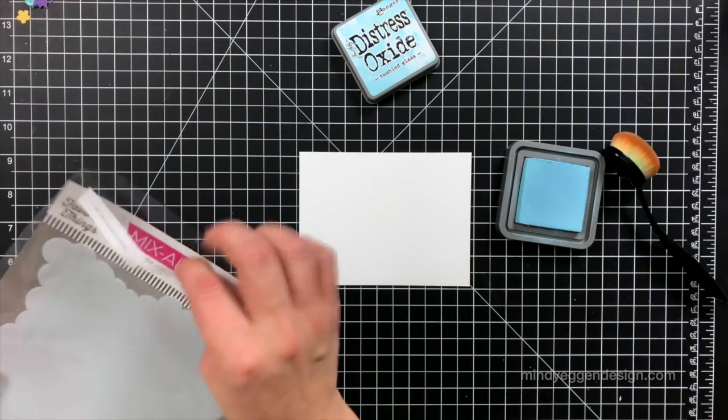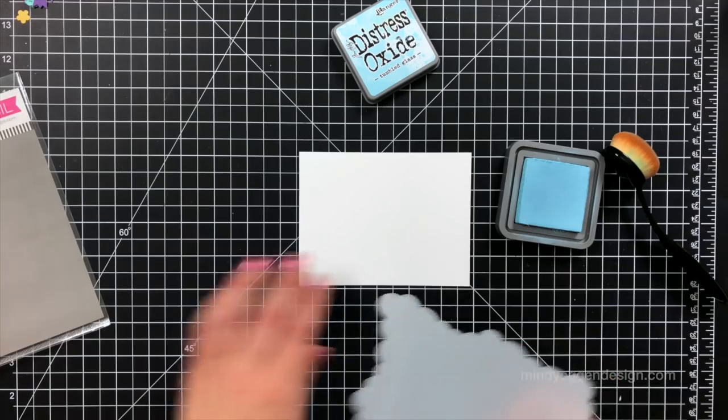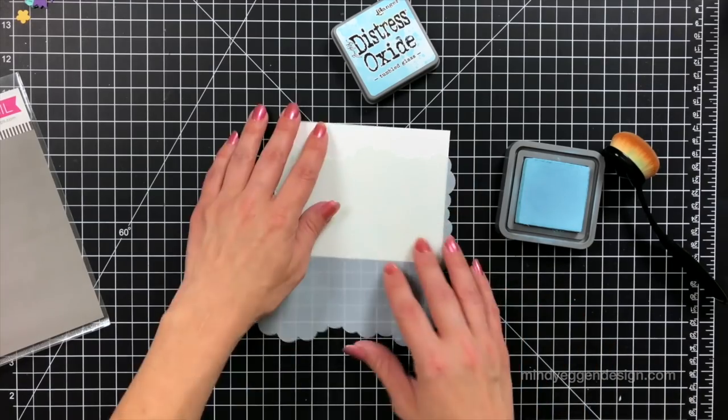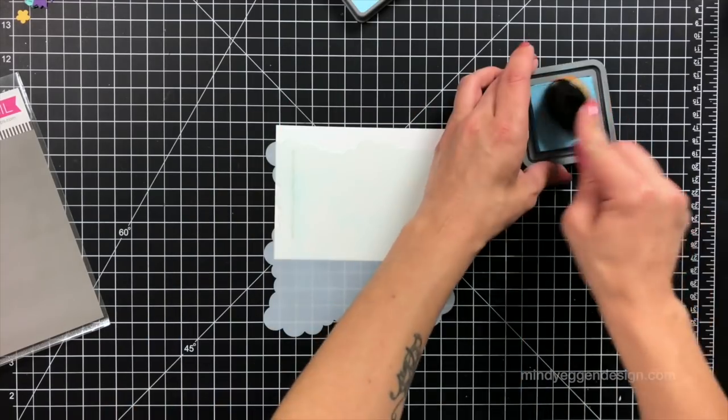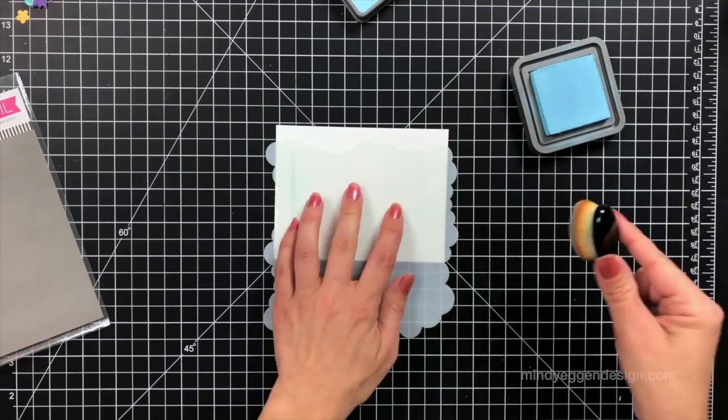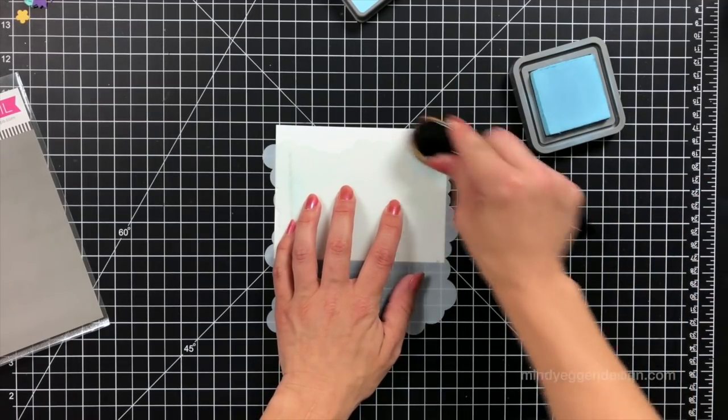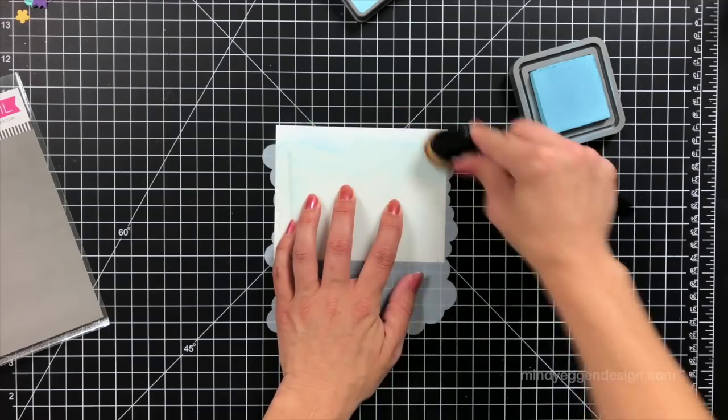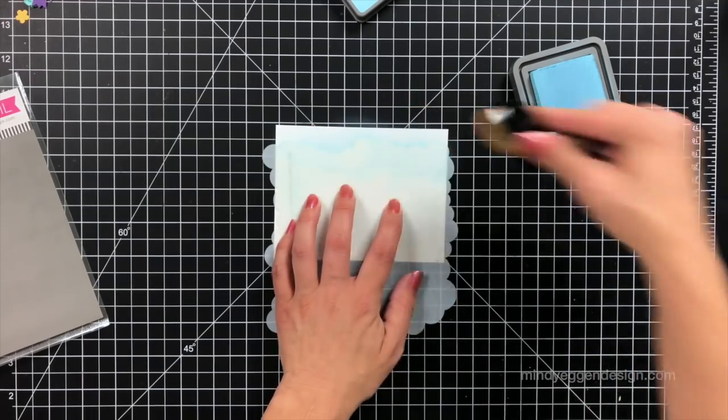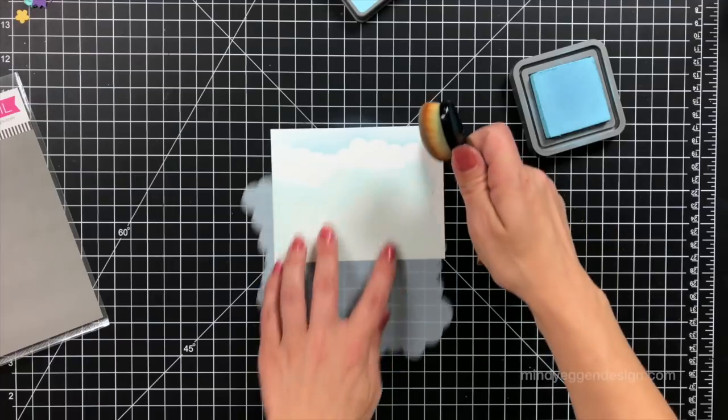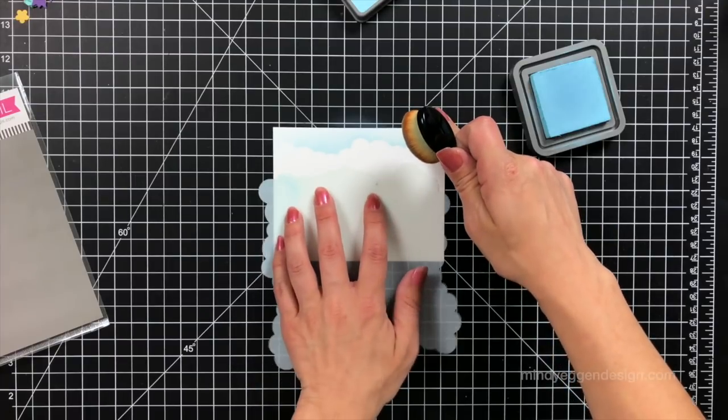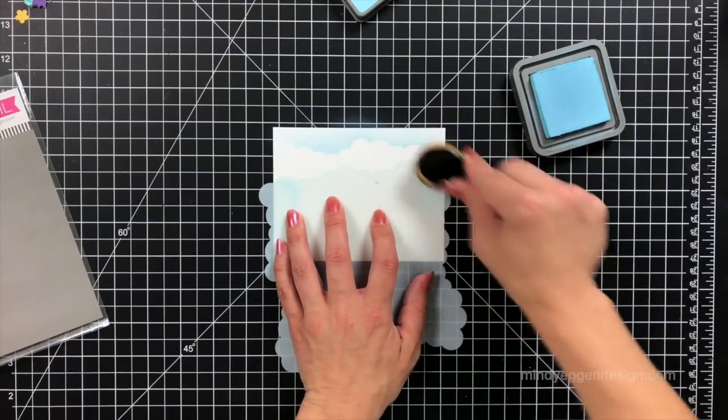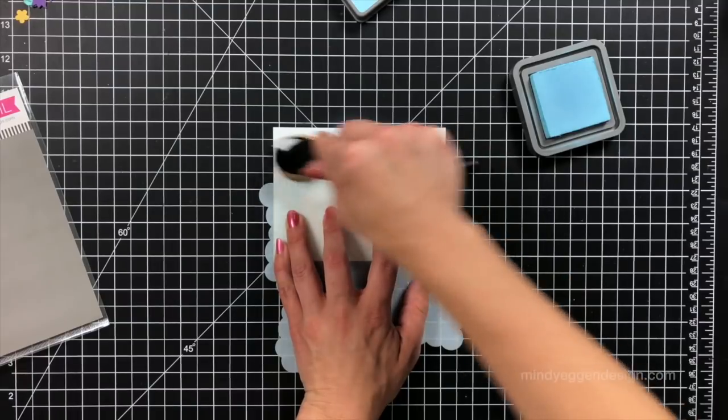Now I'm actually going to start my card off this time by creating the background first. The first thing that I wanted to do was add some clouds. Depending how you arrange your card in the end will determine how much of the clouds you see. I'm using a mini cloud stencil from My Favorite Things, and I'm just applying some Tumbled Glass Distress Oxide ink with my life changing brush.